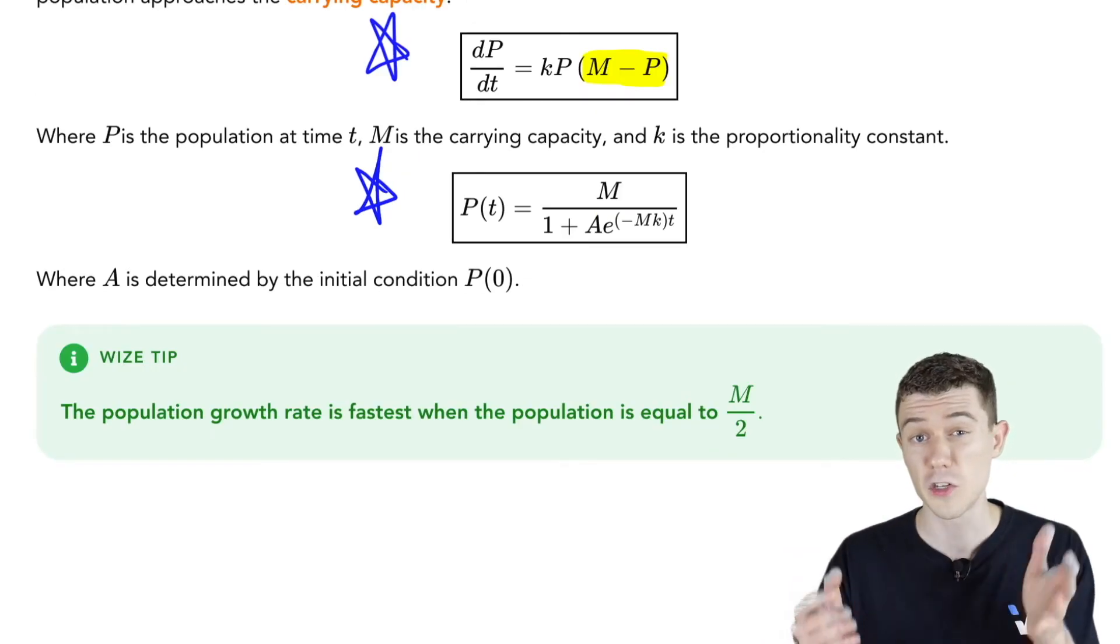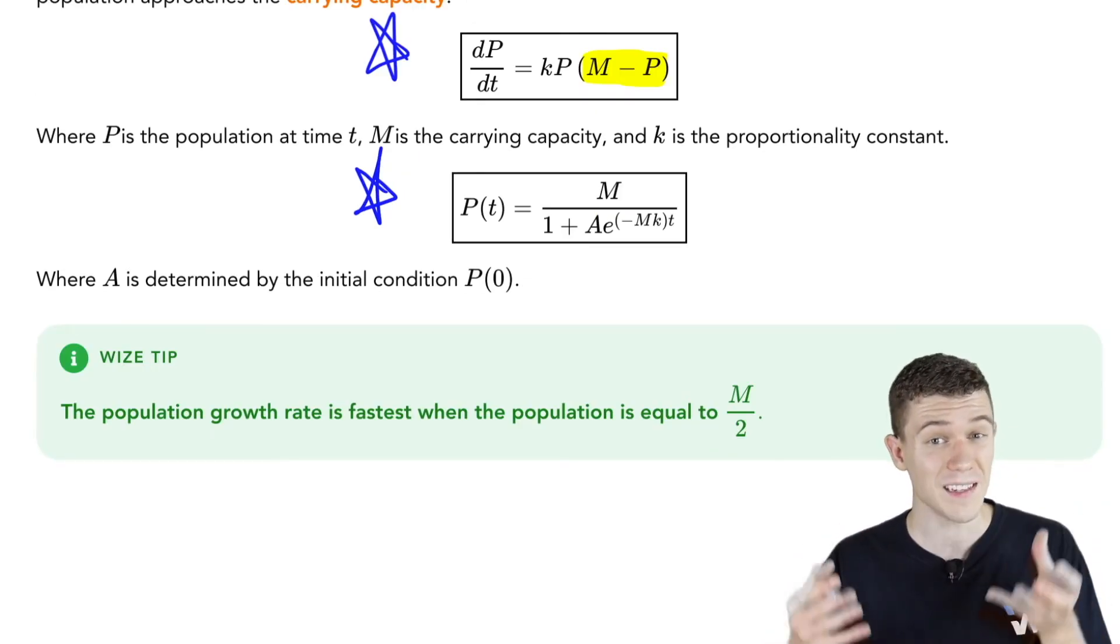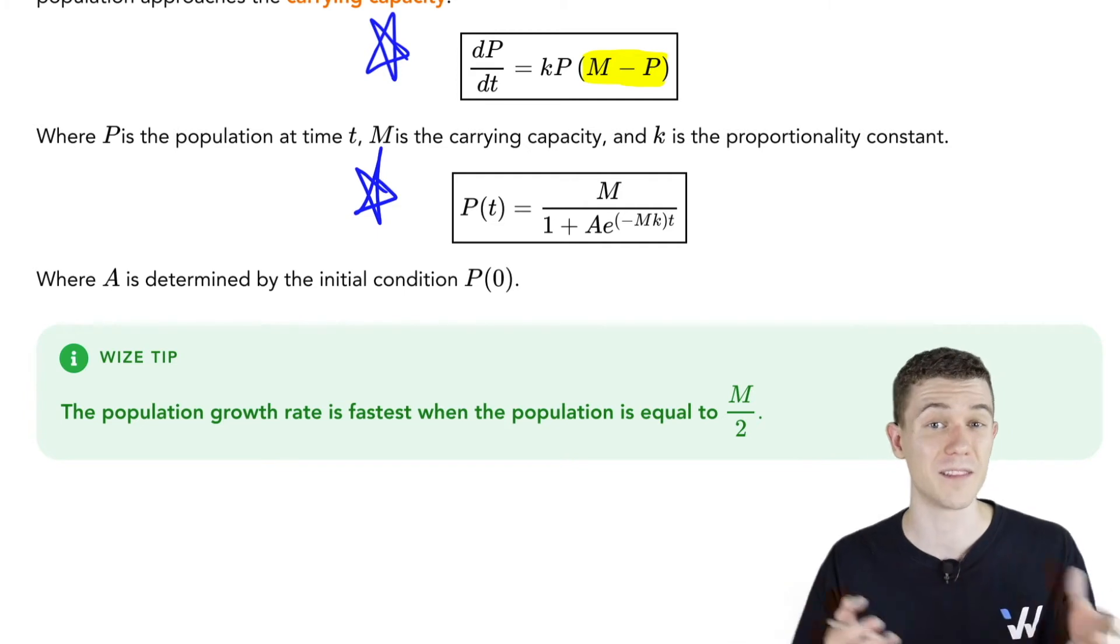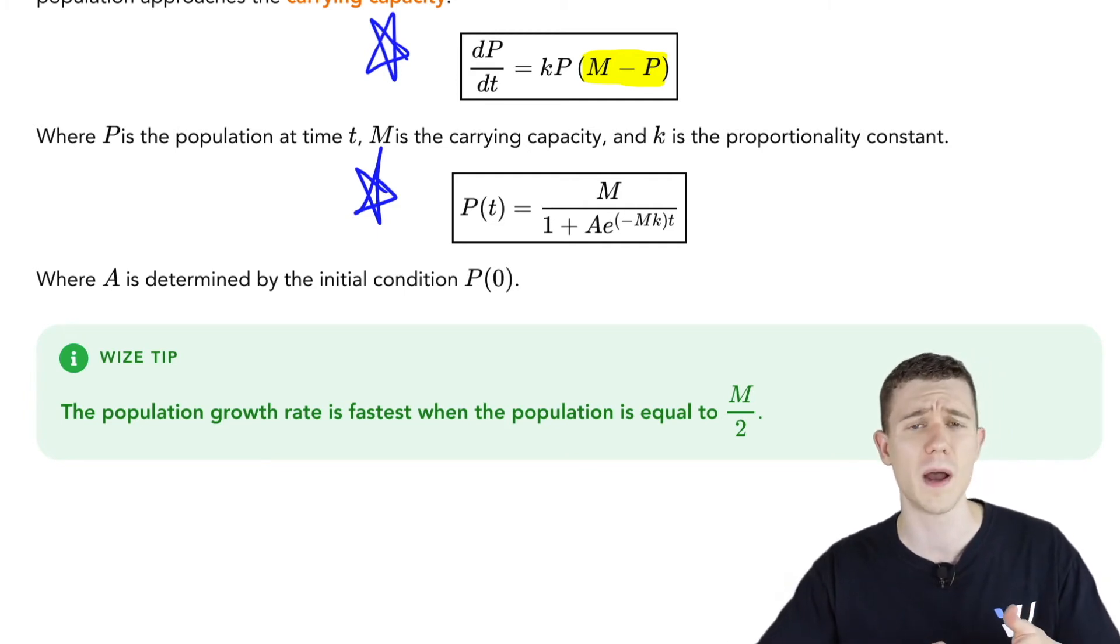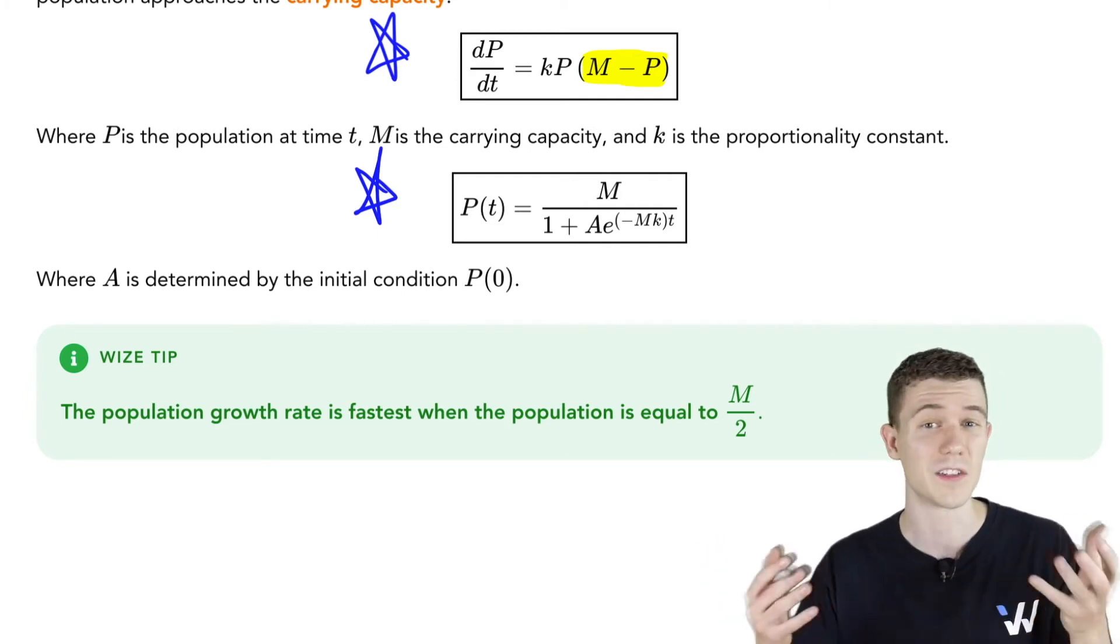An interesting fact about the logistic growth model is that the fastest growth happens at half the carrying capacity. All of a sudden, the population starts to boom, and then it starts to slow down again.